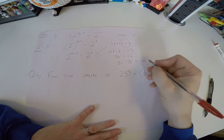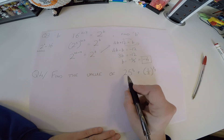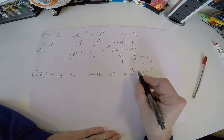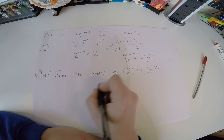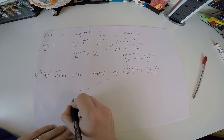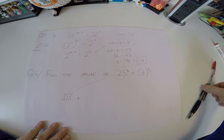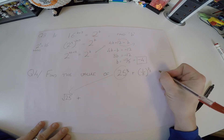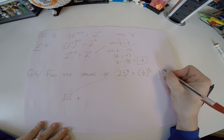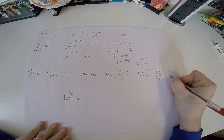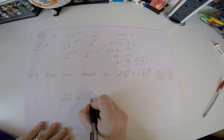Now a slightly more difficult one: find the value of 25 to the power of a half plus (1/8) to the power of one third. 25 to the power of a half is the square root of 25. For (1/8) to the power of a third, remember a fraction to a power means the power comes into each term: that's 1 to the power of a third over 8 to the power of a third.